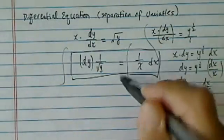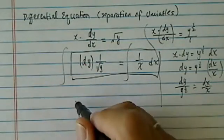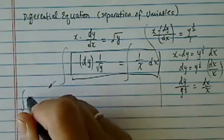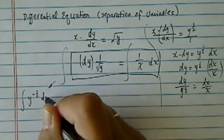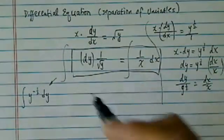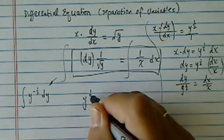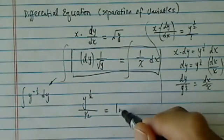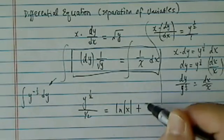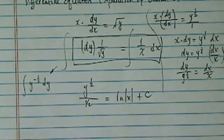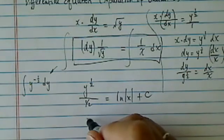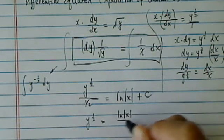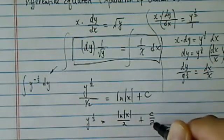From here, what we're going to do is integrate on both sides. This should be pretty easy. Integration on the left side is really y to the minus half dy. Using integration, I have y to the half — with a half on the bottom — is equal to natural log of x plus a constant.